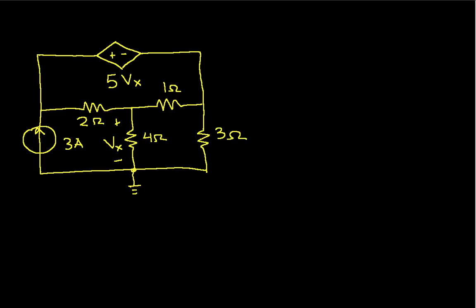The next thing we need to do is determine what the node voltages are. So we have a node here. We'll label this node voltage V1. We have a node here. We'll label this V2.